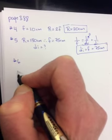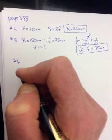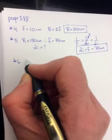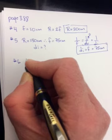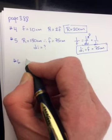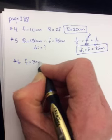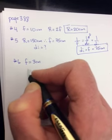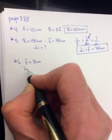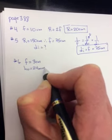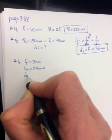Number 6. Sun falls on a concave mirror and forms an image 3 centimeters from the mirror. The sun is a distant object. So it's really then telling us that F is 3 centimeters. If an object 24 millimeters high, HO, is placed 12 centimeters from the mirror, DO.